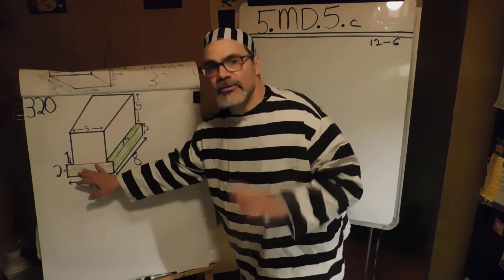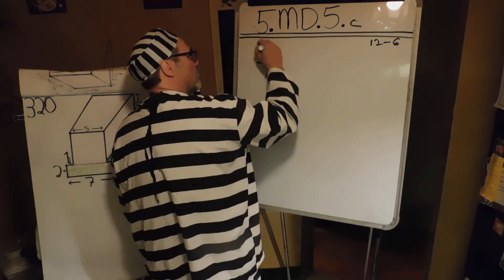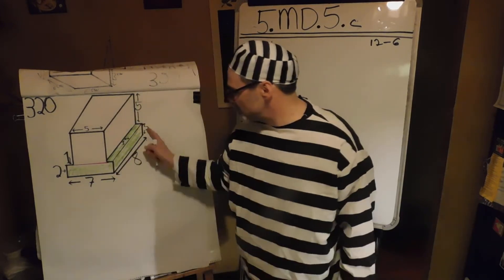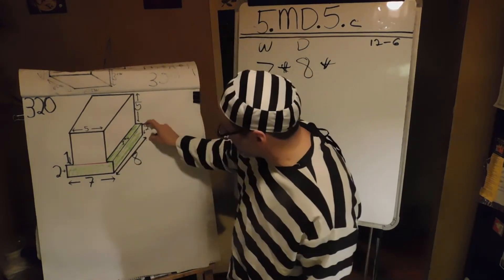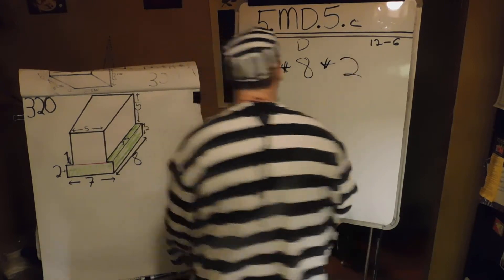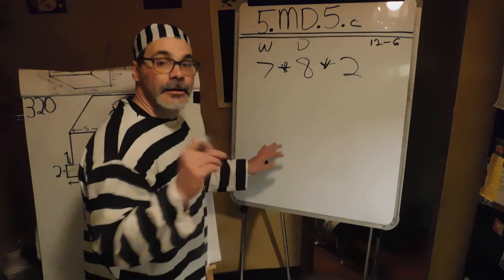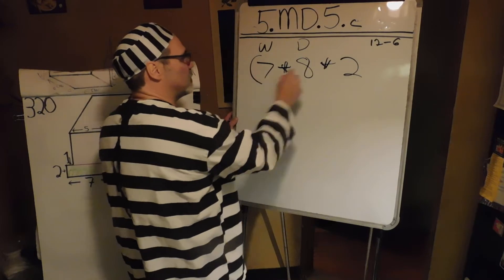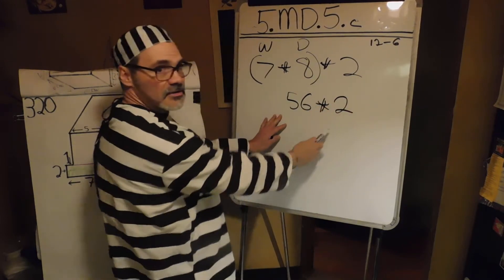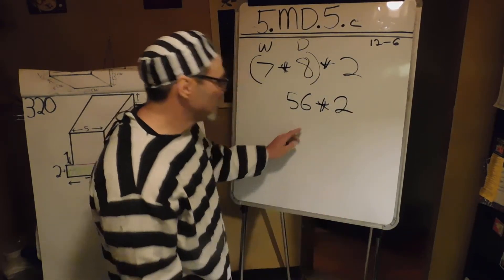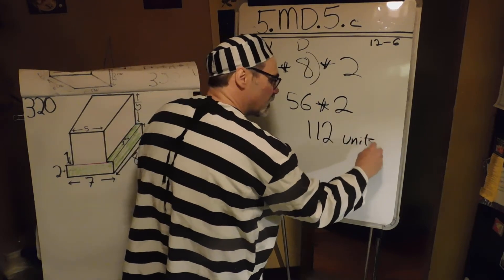We're going to determine the volume of the green one first. It is seven wide, eight deep, and the height is two. As Mr. Creel has taught you, you just have to multiply — and the order doesn't matter. Seven times eight is 56. Fifty-six times two: fifty times two is a hundred, and two times six is twelve. Put them together and that is one hundred twelve cubic units.